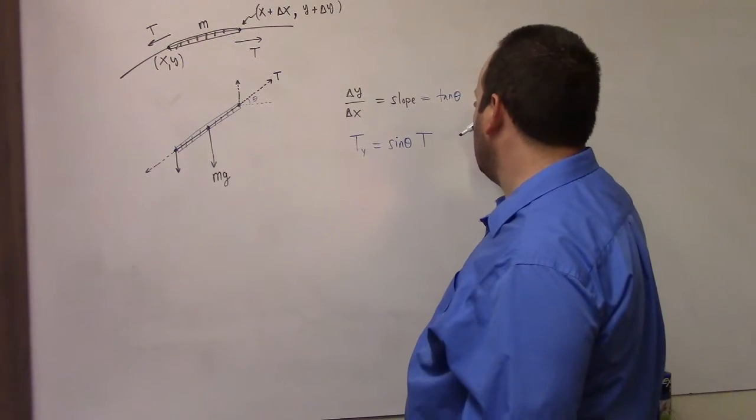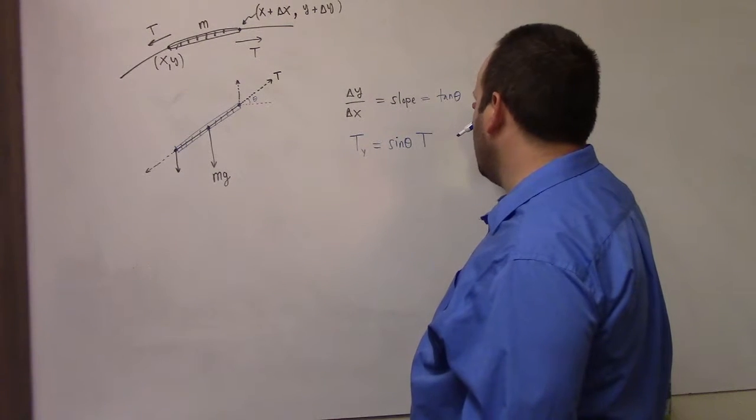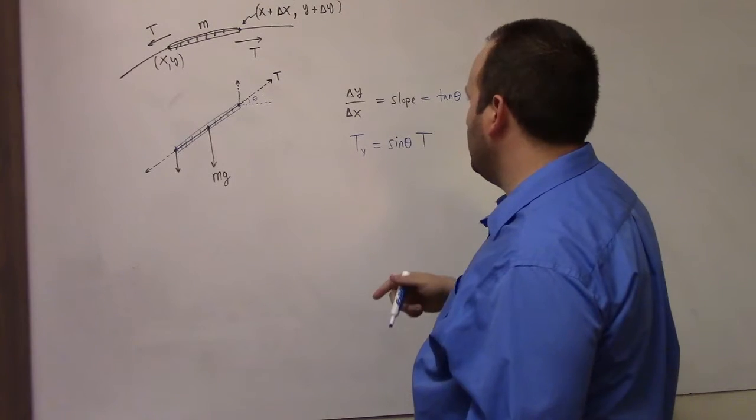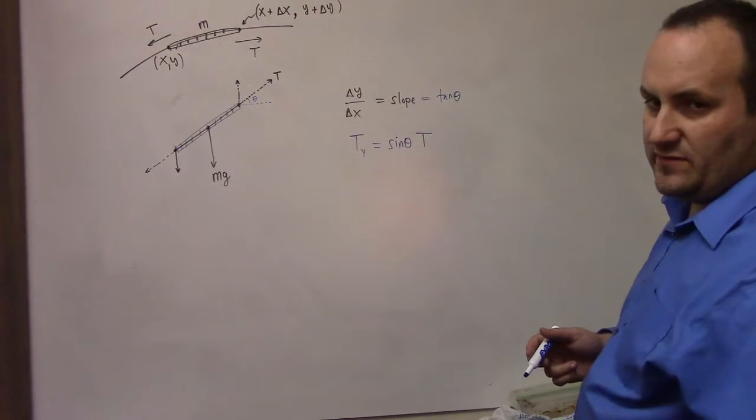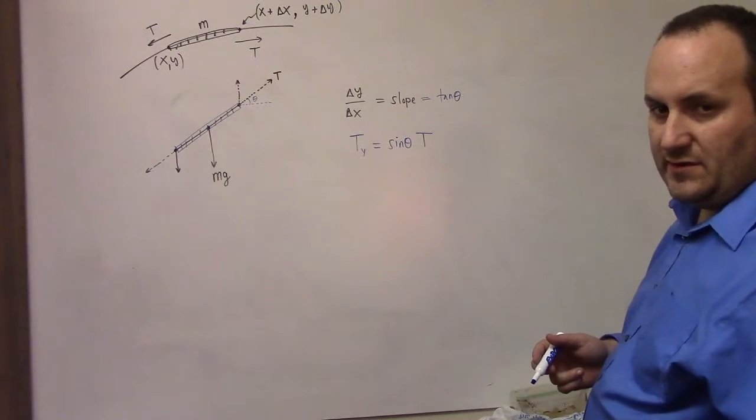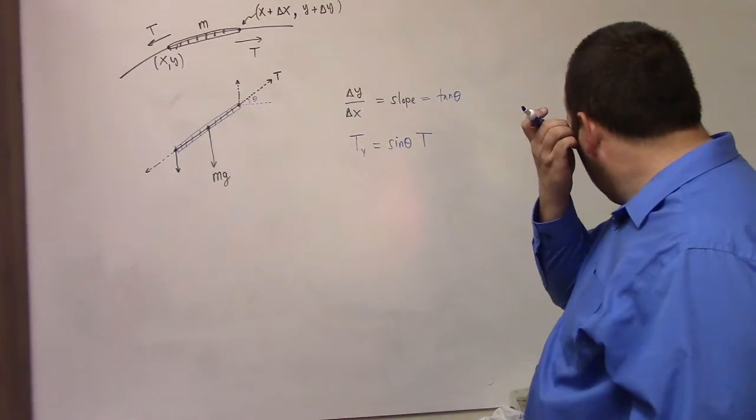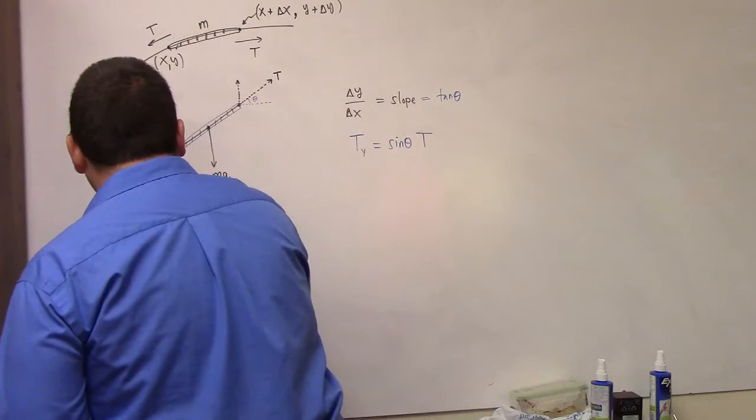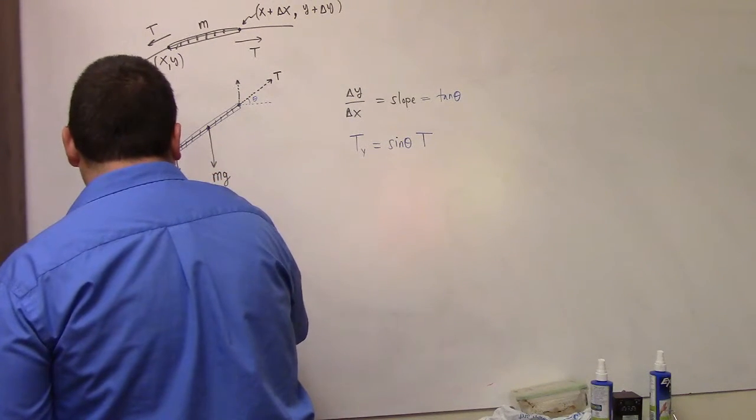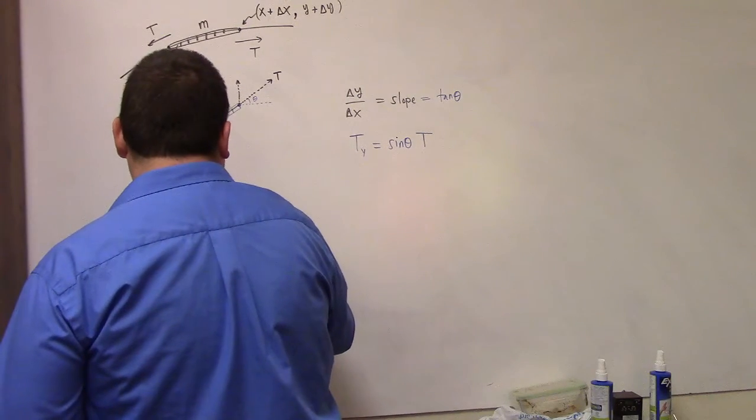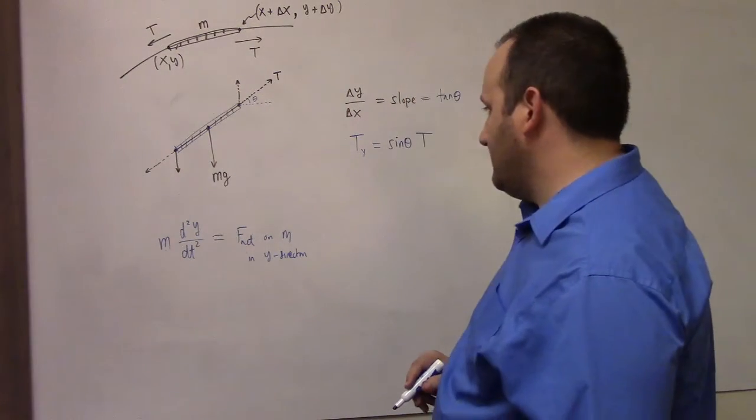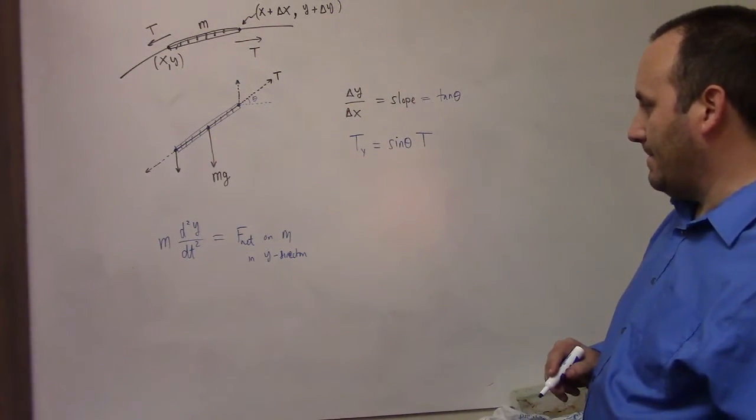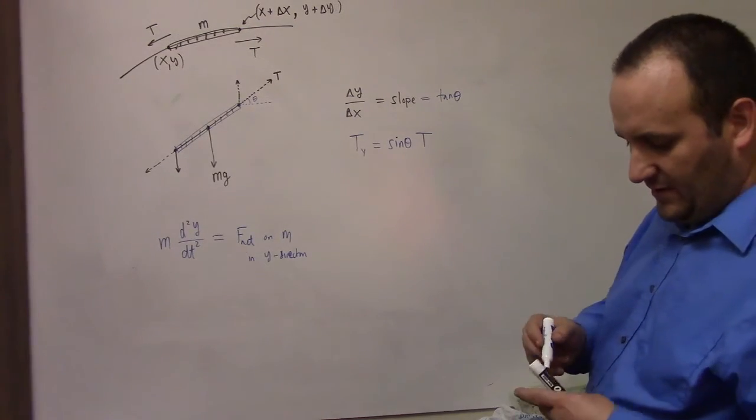I'm trying to get the net forces on the little bit of string, and then I'm going to use Newton's law to equate the time rate of change. I'm going to look at the vertical forces. Eventually I'm aiming for d squared y dt squared, the mass is equal to the net force on m in the y direction. I'm sorry.